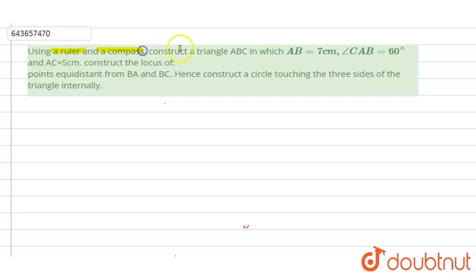a ruler or a compass, construct a triangle ABC in which AB = 7 centimeter, angle ABC = 60 degrees, and AC = 5 centimeter. Construct the locus of a point equidistant from BA and BC, and construct a circle touching the three sides